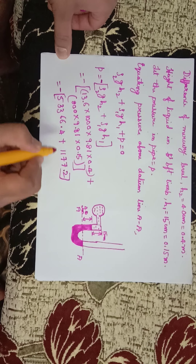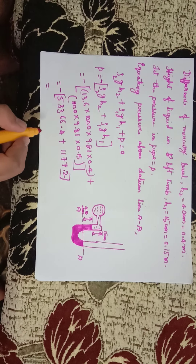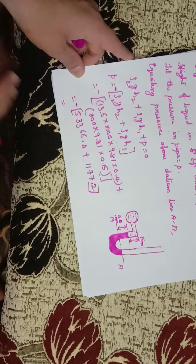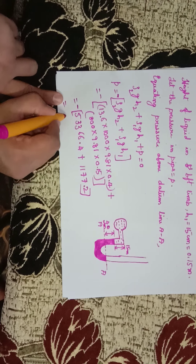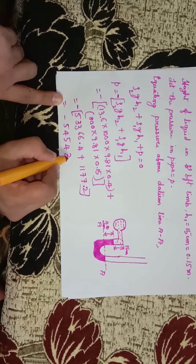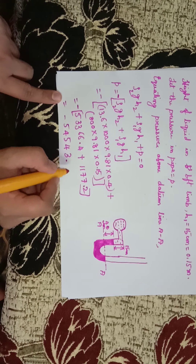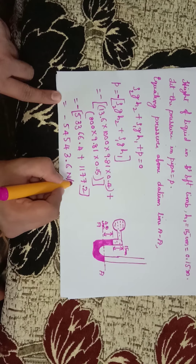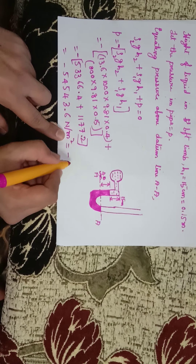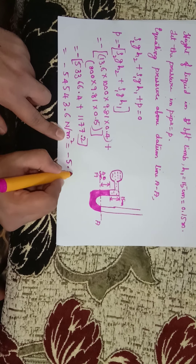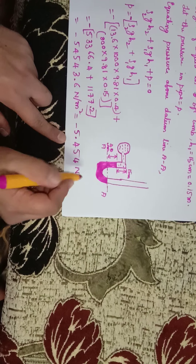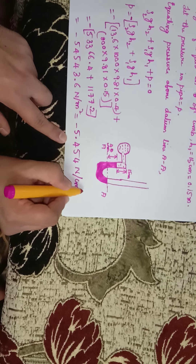Then we get p = minus 54,543.6 Newton per meter square, which is equal to minus 5.454 Newton per centimeter square.